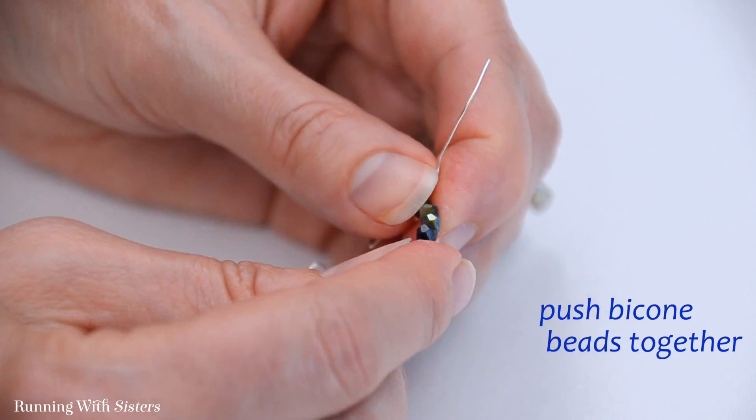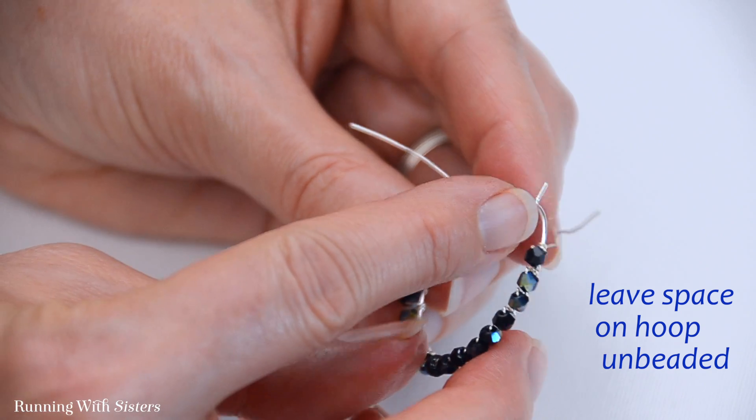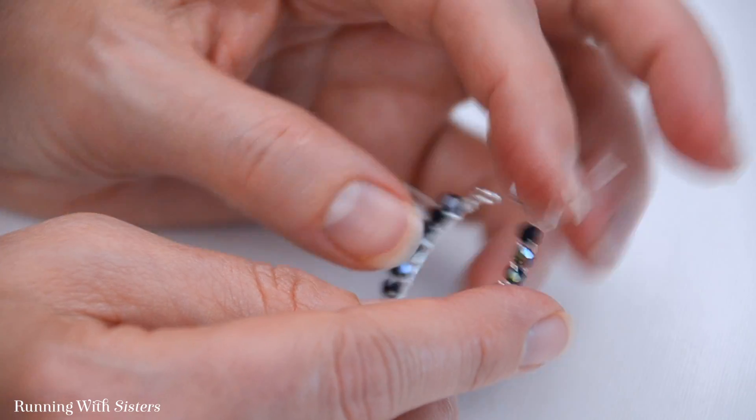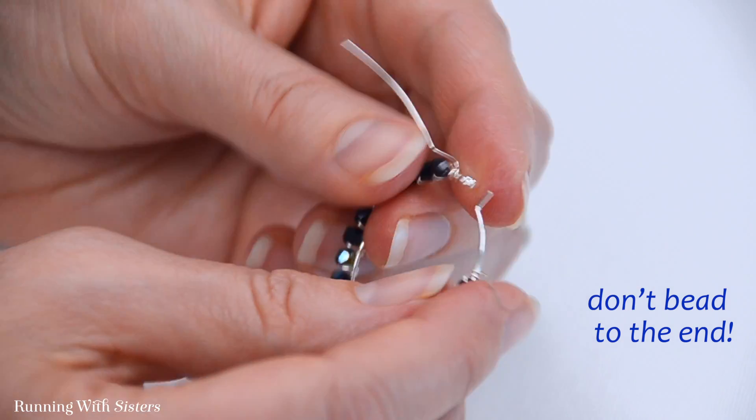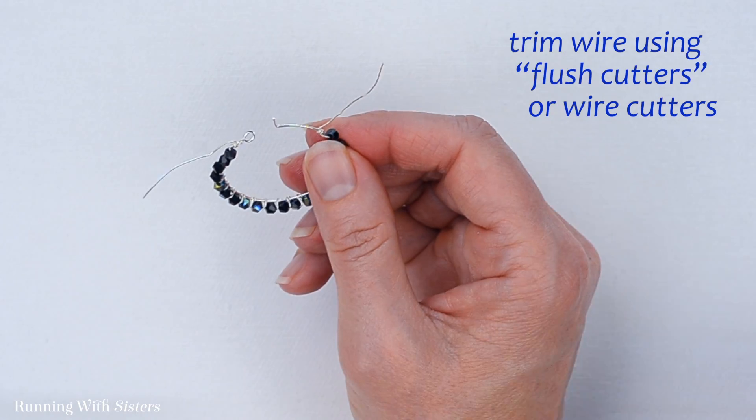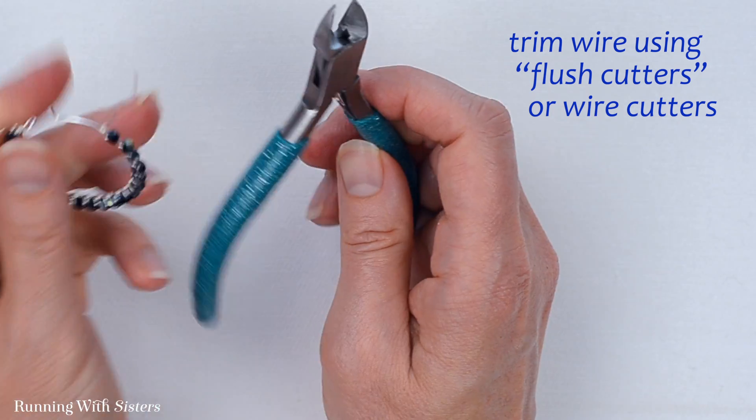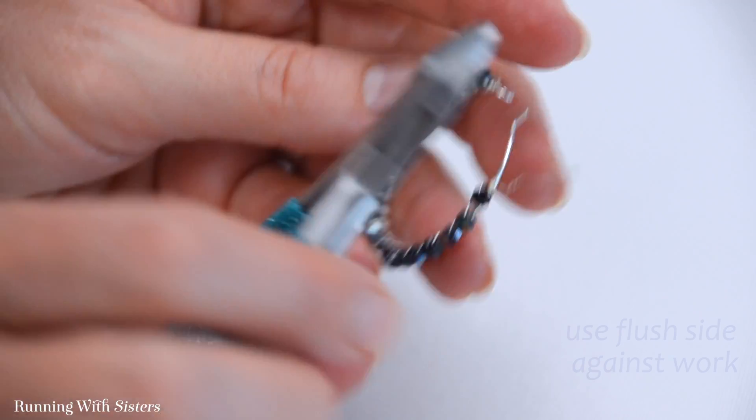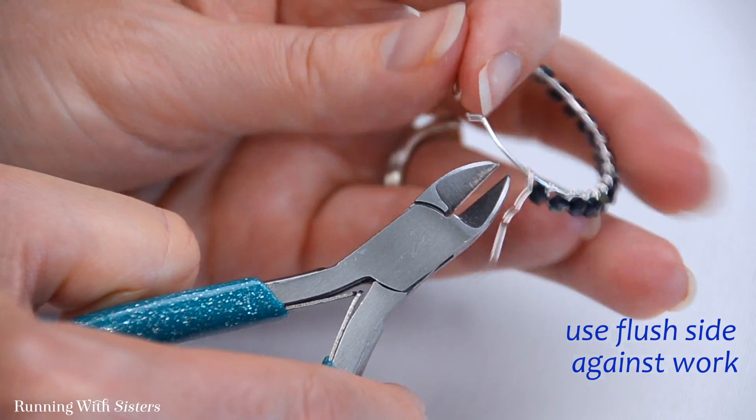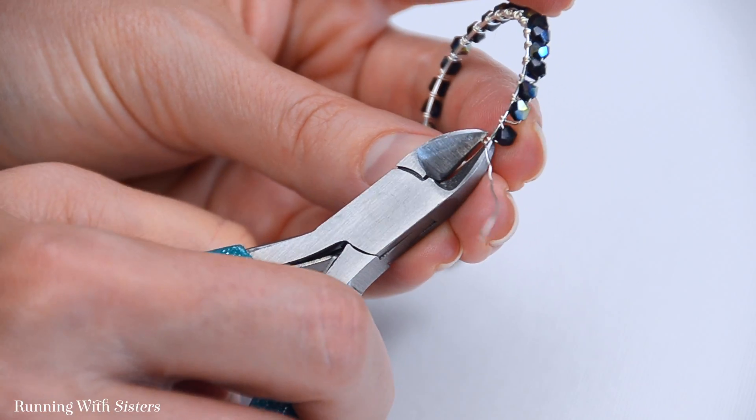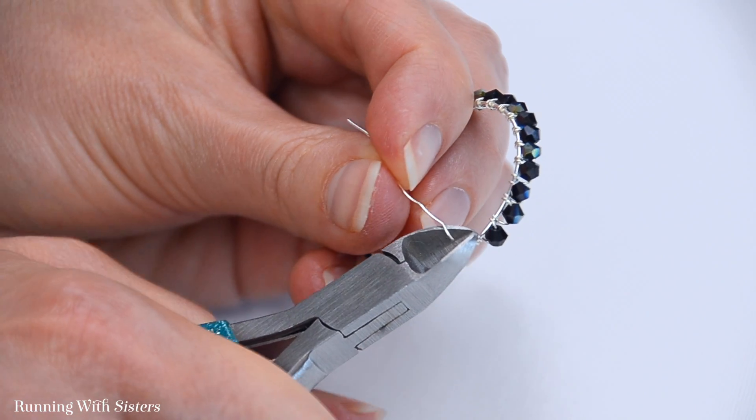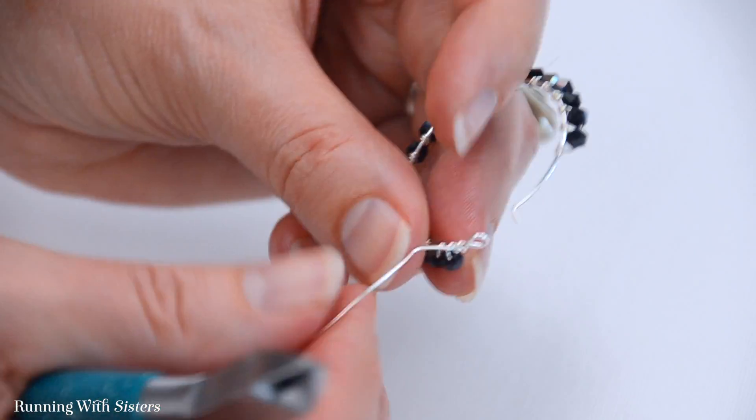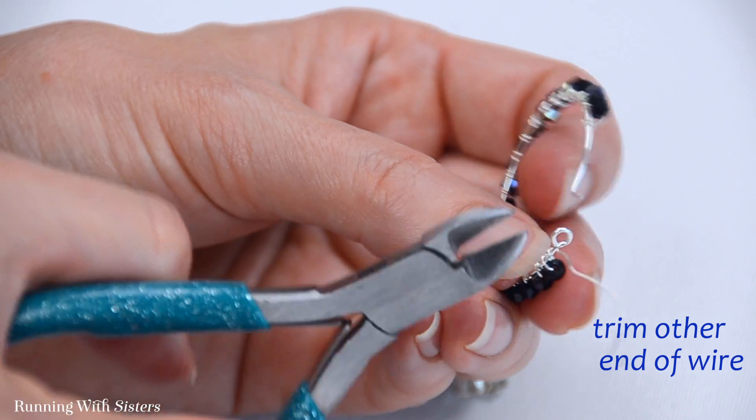I'm going to push all my bicones together. I'm leaving a little bit of space here instead of beading all the way to the end because you do need room to put the earring into your actual earlobe. So don't make the mistake of beading all the way to the end. Now I'm going to trim my wire. I'm using my flush cutters or wire cutters. These have a flush side and an angled side. I'm going to use that flush side against my work so that the cut in the wire ends up being straight across. If you use the pointy side you'll end up with a little pointed cut and we don't want that. I'm going to trim my other end the same way. Be careful not to cut through your work.